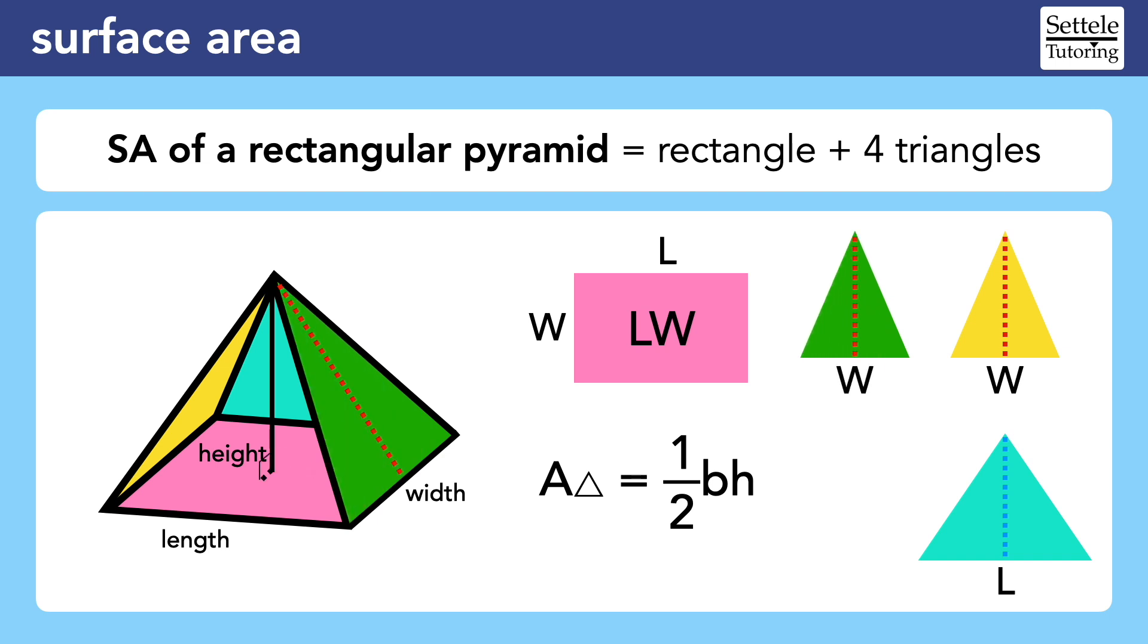We can make yet another right triangle for the other height. This time the other leg is half the width, and the hypotenuse is the height for both the front and back triangles.